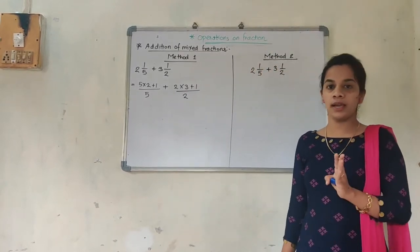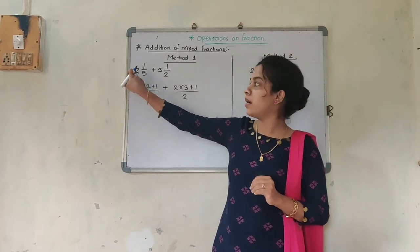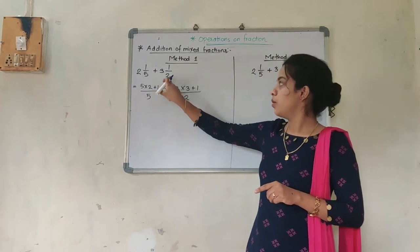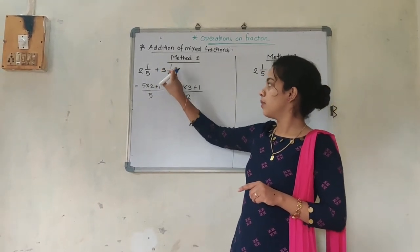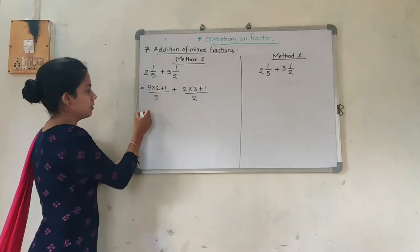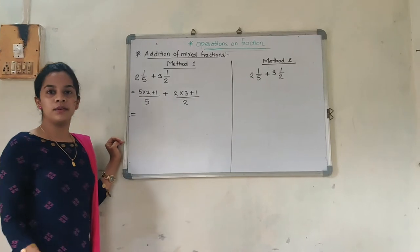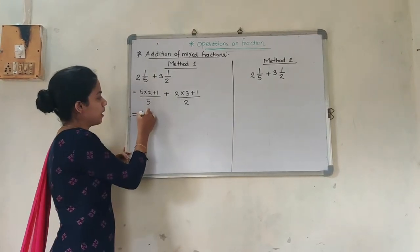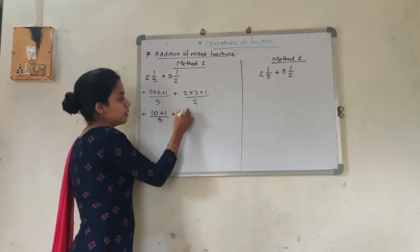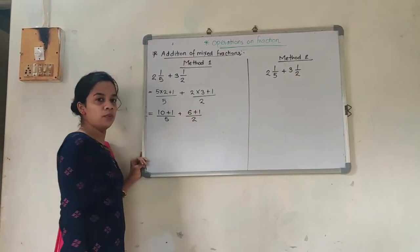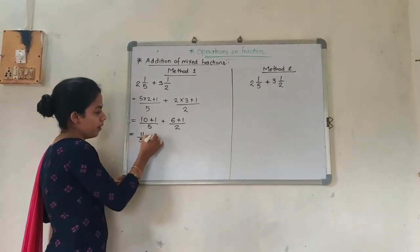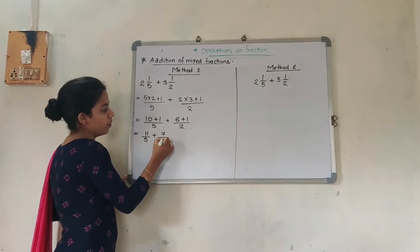5 into 2 — that is 5 multiplied by 2, plus 1, upon 5 — plus, as it is, 2 into 3 plus 1, upon 2. What I need to see carefully: 5 into 2 plus 1 upon 5, because the denominator was 5; and 2 into 3 plus 1 upon 2. Now focus on the next part. 5 into 2 is 10 plus 1, upon 5; plus 2 into 3 is 6 plus 1, upon 2. So we get 11/5 plus 7/2.